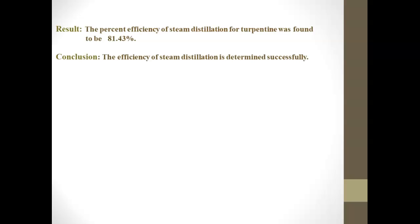Result: The percent efficiency of steam distillation for turpentine was found to be 81.43%. Conclusion: The efficiency of steam distillation was determined successfully.